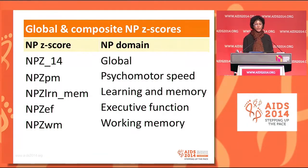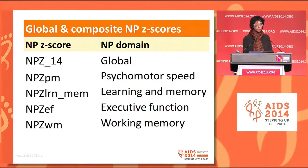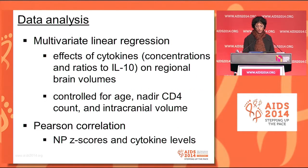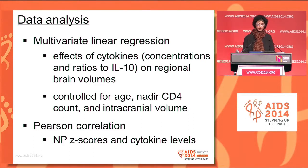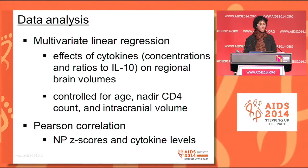We normalized the raw neuropsychological test scores to Z scores and computed a global NPZ score as well as composite scores in four domains. We used multivariate linear regression to look at the effects of cytokines on regional brain volumes, adjusting for age, nadir CD4 count, and intracranial volume. Pearson correlation was computed between NPZ scores and cytokine levels.